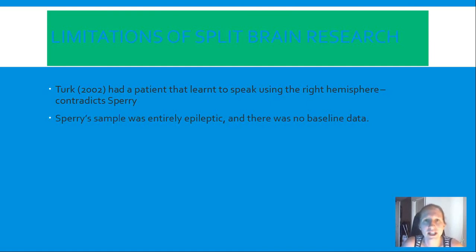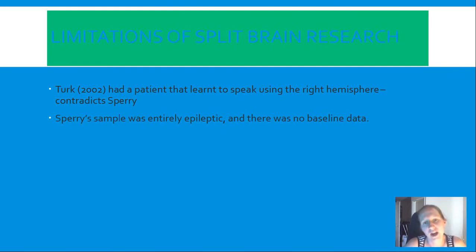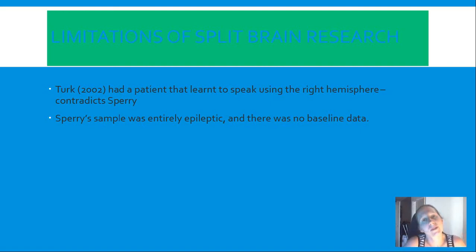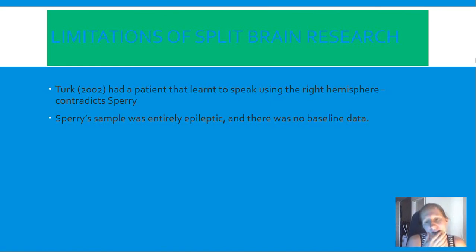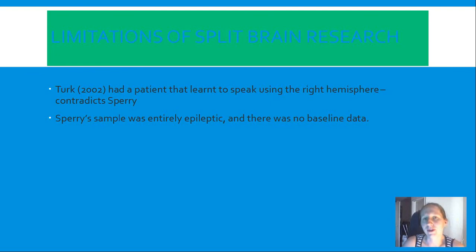Sperry's sample was made up completely of epileptic patients. That's a problem because in experiments you want to use people with normal brains so you can generalise to as wide a population as possible. Epileptic patients' brains don't work the same as everyone else's, and you have no baseline data about how their brains were working beforehand, so it's very difficult to generalise from these patients to everyone else.